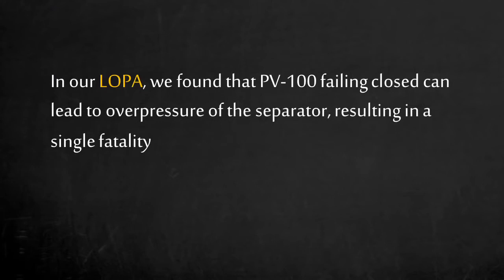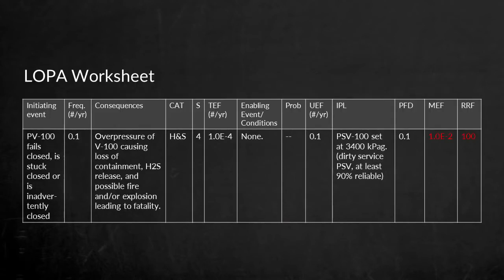From our LOPA, we found that the vessel can overpressure if PV100 failed closed, and it can result in a single fatality. Our tolerable frequency is 0.01% chance per year. The LOPA concluded that this scenario was 100 times more likely to occur than our tolerable frequency, even with the PSV in place. This is unacceptable. The additional risk reduction factor of 100 is required.